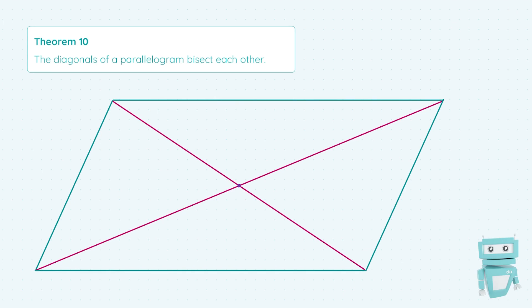For instance if we look at this diagonal running from the bottom left corner of our parallelogram to the top right corner, the line from the bottom left to the middle is the same as the length from the middle to the top right. So these two lines are equal in length.